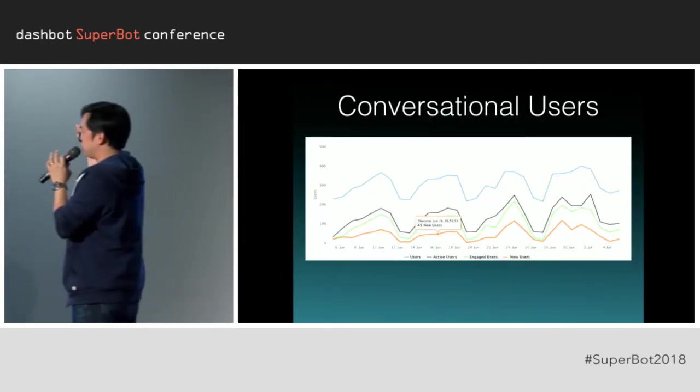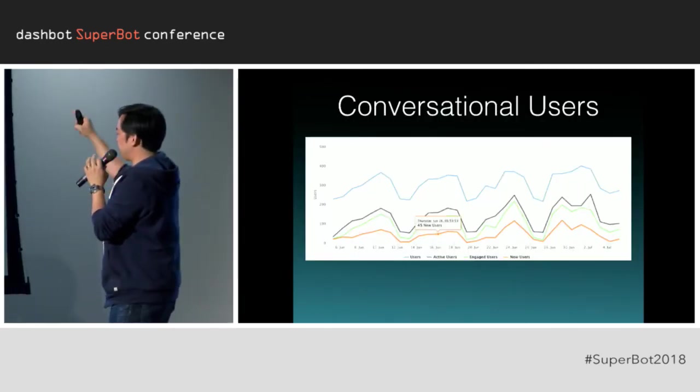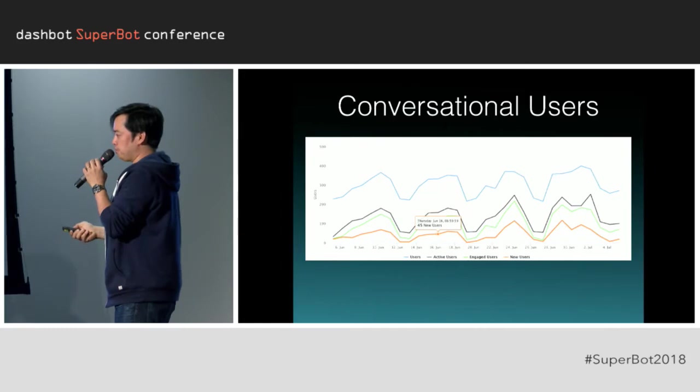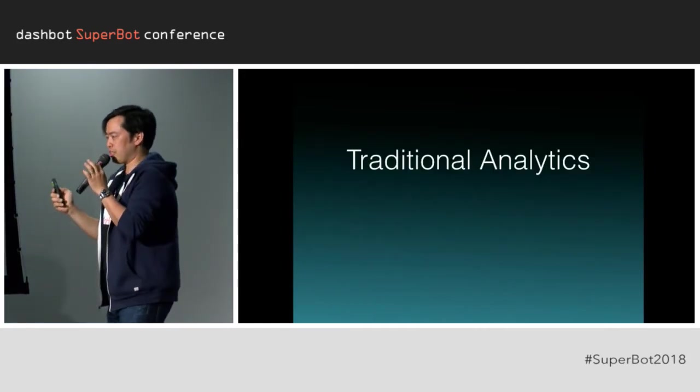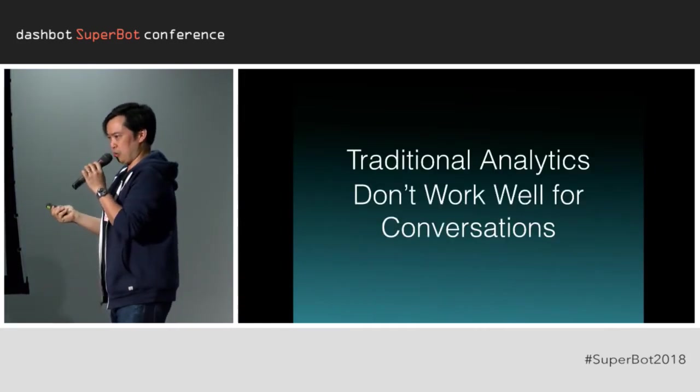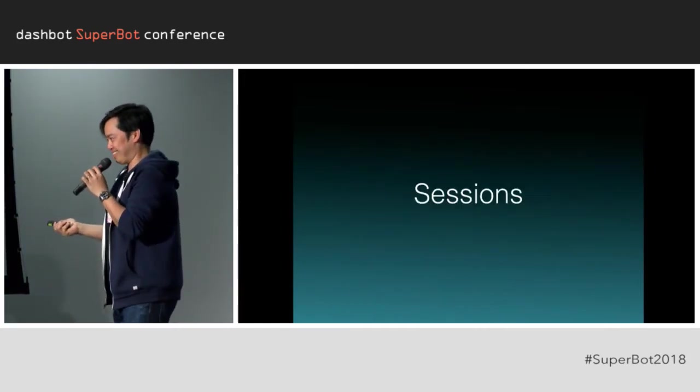That's what you see in DashBot — we have four lines: new, active, engaged, and total. And this really just shows you that traditional analytics don't work well for bots.